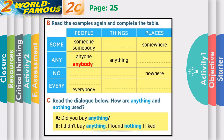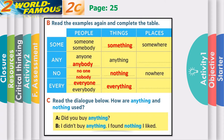Activity B: Finish the table with the appropriate examples. Some — with people: someone, somebody. Any — anyone, anybody. No — no one, nobody. Every — everyone, everybody. What about things? Some — something. Any — anything. No — nothing. Every — everything. What about places? Some — somewhere. Any — anywhere. No — nowhere. Every — everywhere. Pause the video and copy the answers.